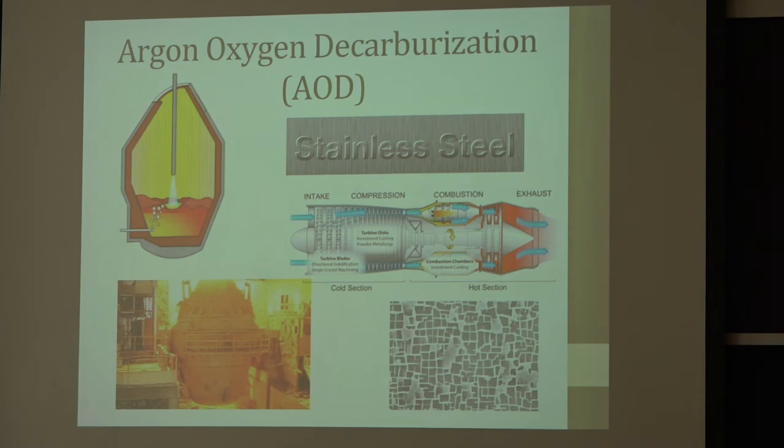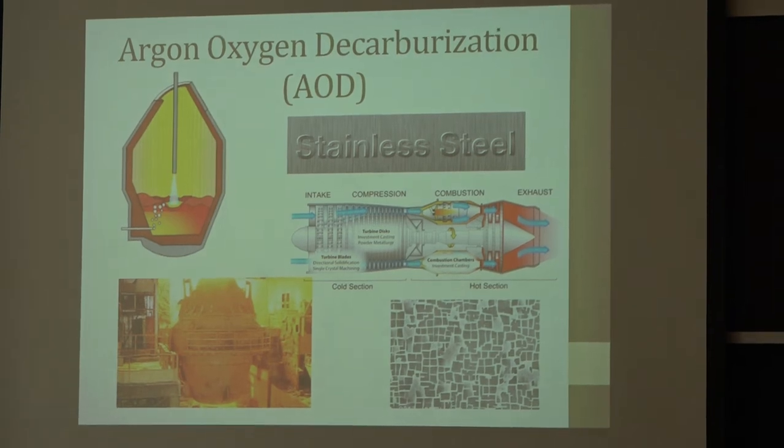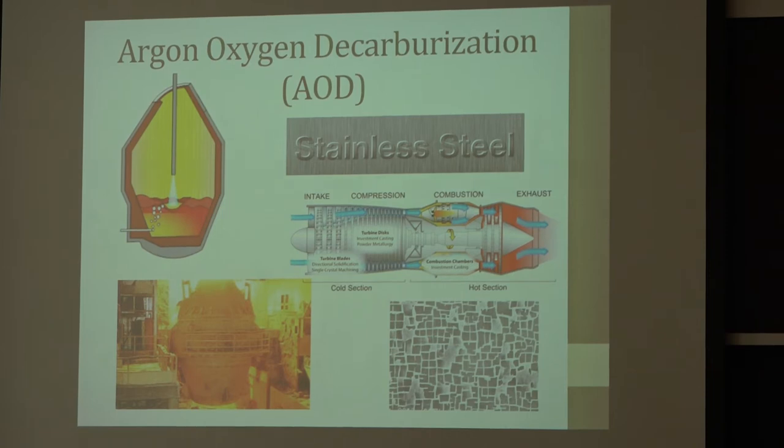There's a process called argon oxygen decarburization. It's the way we make all the stainless steel in the world today and most of the nickel-based super alloys for jet engines. Very high-quality process. It looks like the BOF, the basic oxygen furnace where you burn the carbon out of the steel. But in this case you basically take the low-carbon wrought iron type of steel and you blow oxygen and argon through there such that the oxygen is at lower pressure. You generate carbon monoxide at a lower pressure and you can get your carbon down below 0.03%. You can get it down to 0.01%. That means you can make very, very good quality stainless steel. The seeds of this were generated down in the basement of Building 8 with one of the graduate students of John Chipman.